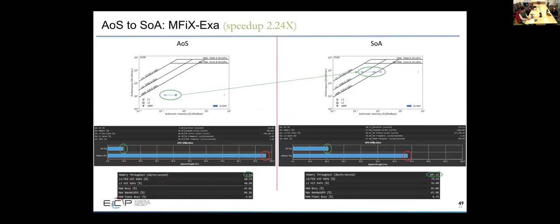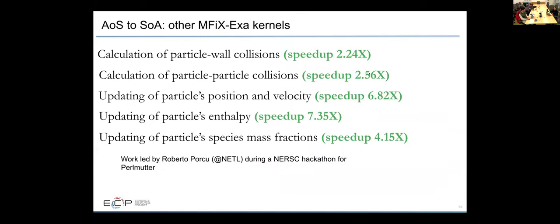This is another example from the mFix Exa code of doing this same conversion. There's two roofline plots that we made there, both using array of struct and then after converting to struct of arrays. You can see we're getting much better memory throughput on the GPUs. This was done on the Perlmutter platform with the struct of array layout and also moved up on the roofline considerably as a result of doing this. That was for a kernel that was calculating collisions between particles and the embedded boundary geometry in this chemical looping reactor. We got similar speed ups from a bunch of kernels throughout the code for doing this transition. This was work led by Roberto Porcu during a NERSC hackathon on the Perlmutter platform.